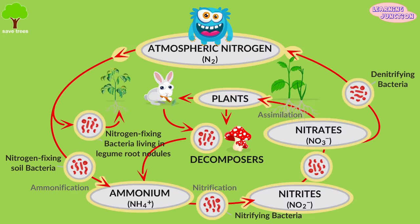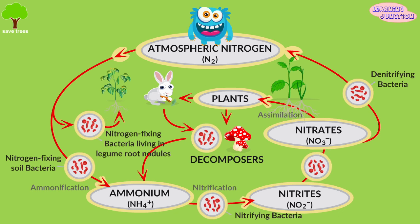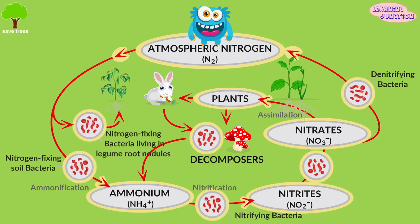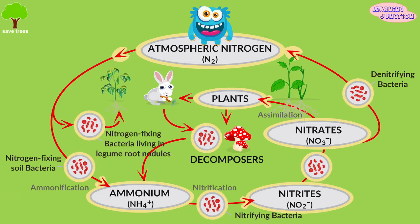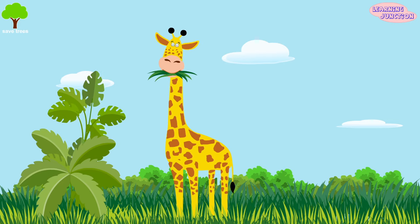Bacteria plays a very important part in nitrogen cycle. When nitrogen is absorbed by the soil, bacteria help it to change states so it can be used by plants. Animals eat the plants and then get their nitrogen from the plants.